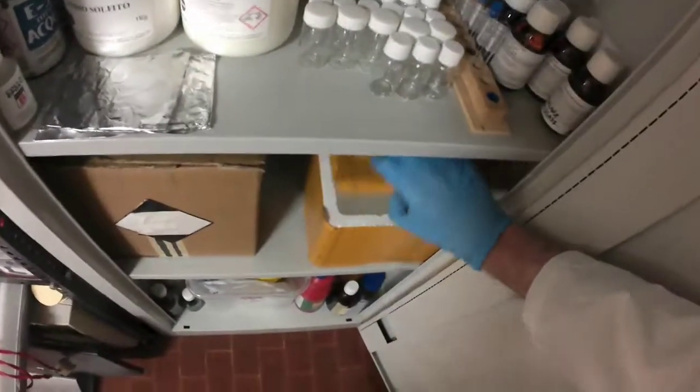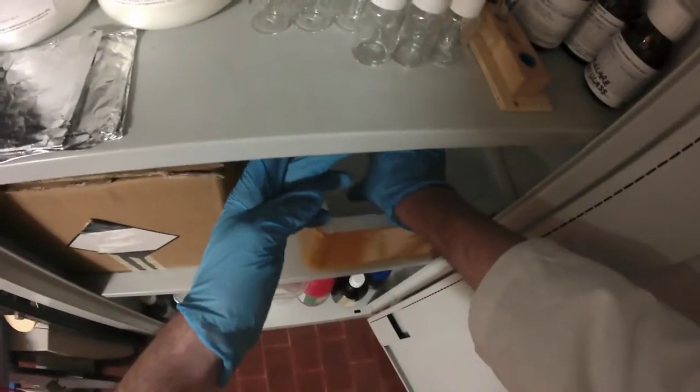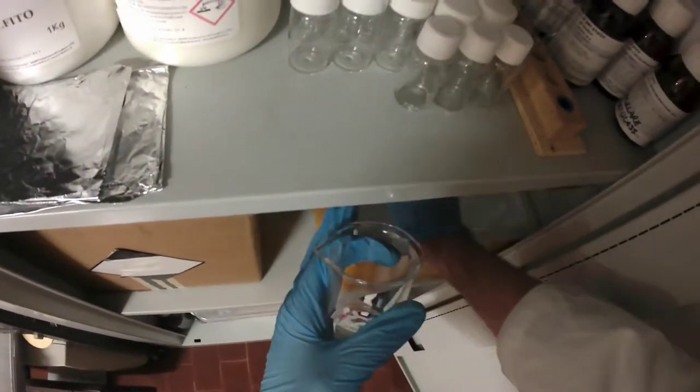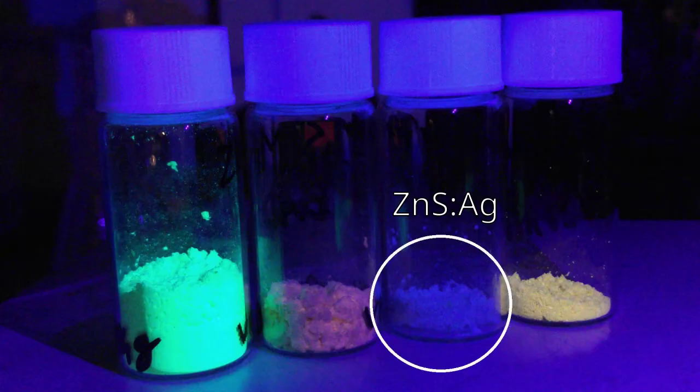Welcome back to the lab. Today we continue purifying reagents to eventually make some phosphorescent materials. If you look at my first attempt at making a silver doped blue phosphor, it was very dim. The main problem was the purity of my silver nitrate, and this is what we are going to fix today.